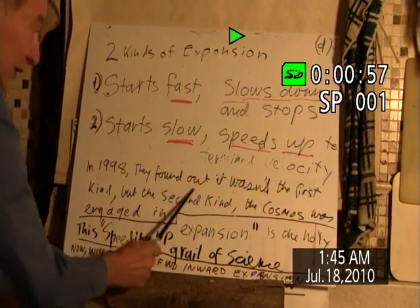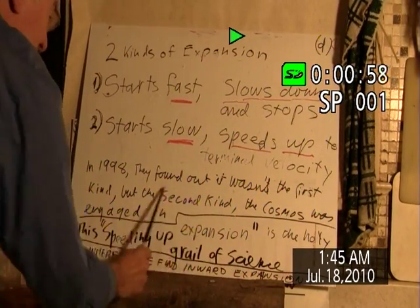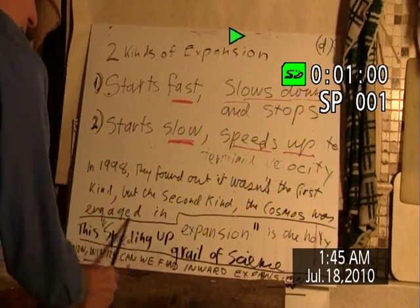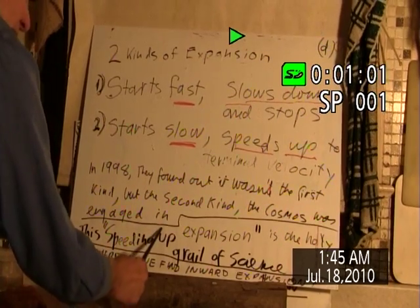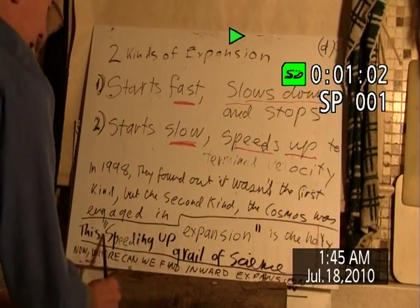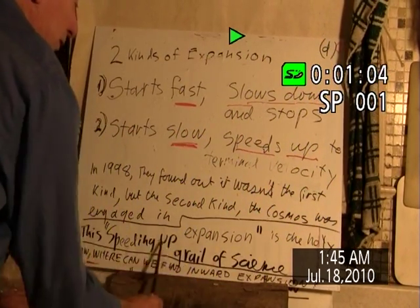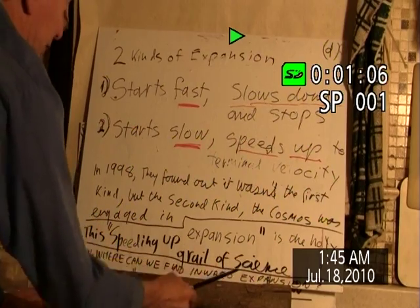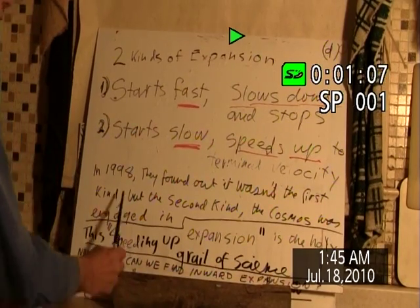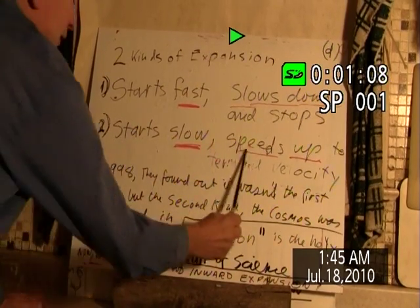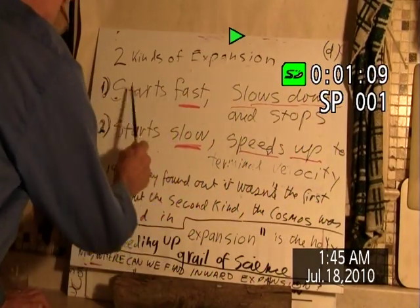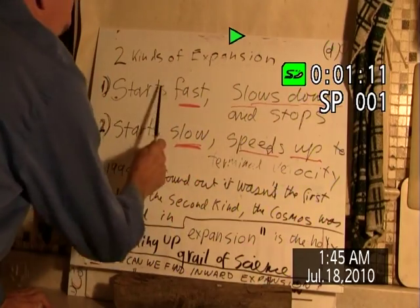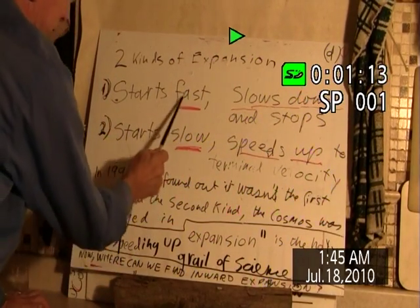In 1998, they found out it wasn't the first kind, but the second kind the cosmos was engaged in. This speeding-up expansion is the holy grail of science — that's what I've heard. This is inward expansion; this is outward expansion. These are opposites, so you can tell.